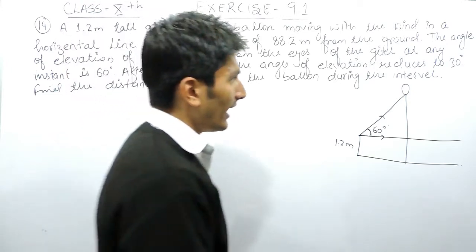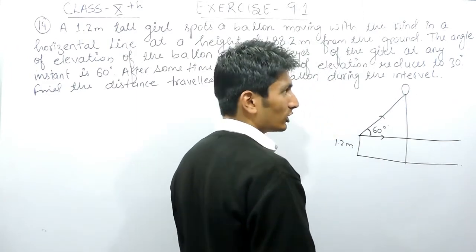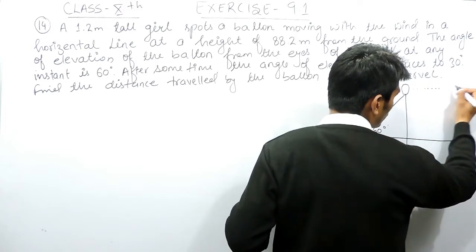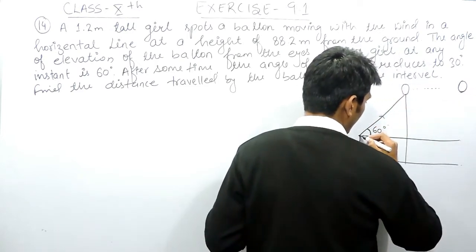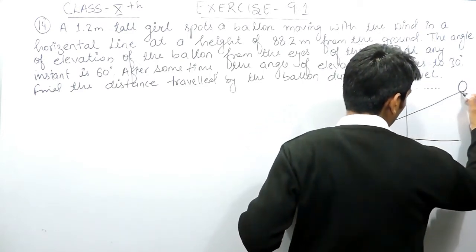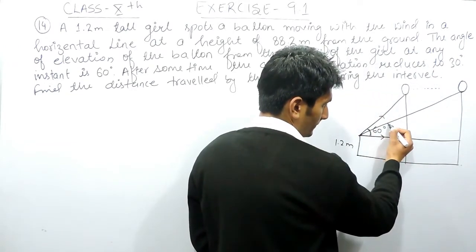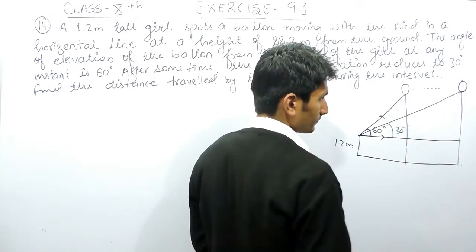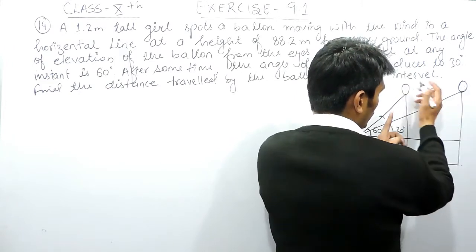It is given that this balloon is moving in a horizontal line, so it must move straight. After some time, this angle reduces to 30 degrees. You have to find the distance traveled by this balloon.